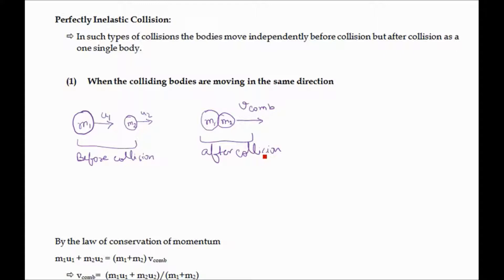We will calculate the velocity and the loss of kinetic energy when both colliding bodies are moving in the same direction. Here two masses m1 and m2 are moving with velocities u1 and u2 before the collision. After collision, both bodies move as a single entity with velocity equal to v_com.